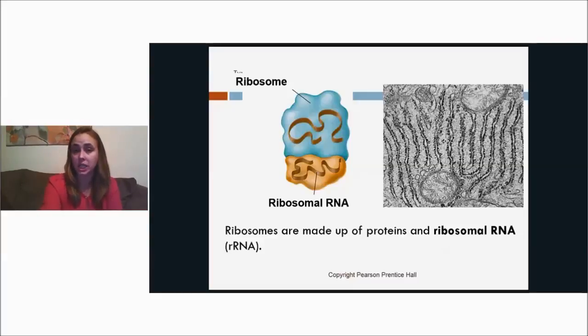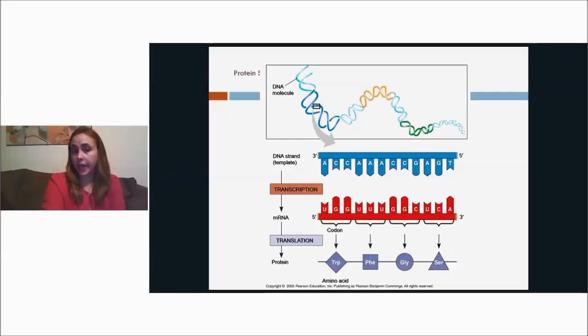It's called rough because it has ribosomes all over it, so it looks bumpy. This is a picture of the rough endoplasmic reticulum under a microscope. You can see the folds in the membrane with all of the dots around it, and the dots on the outside are ribosomes.